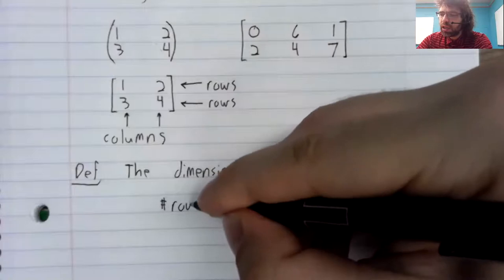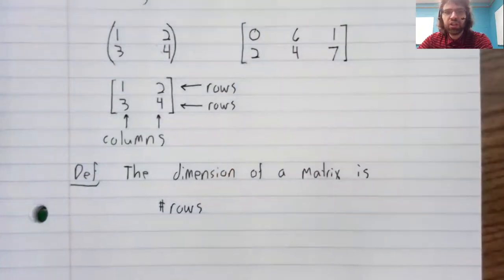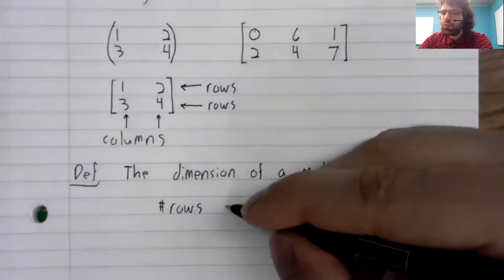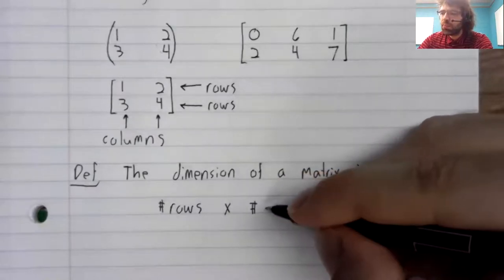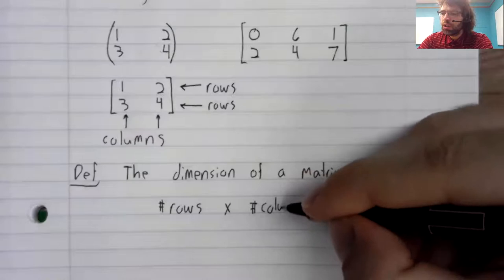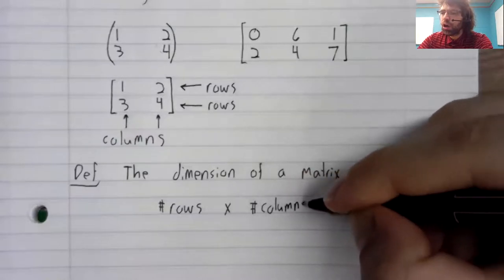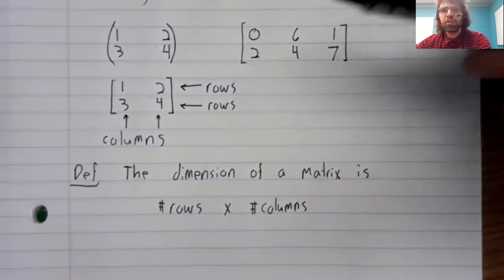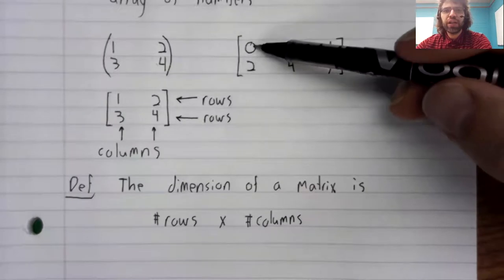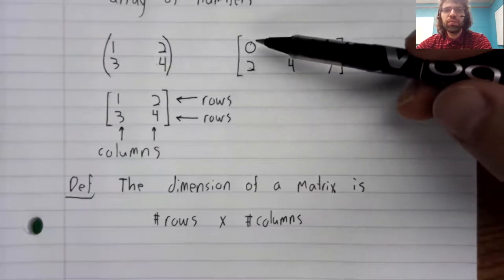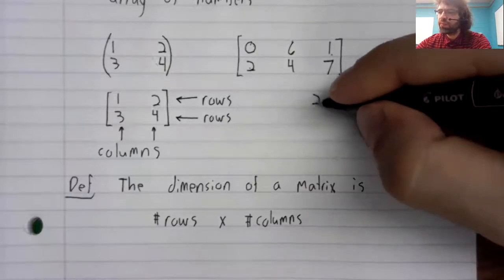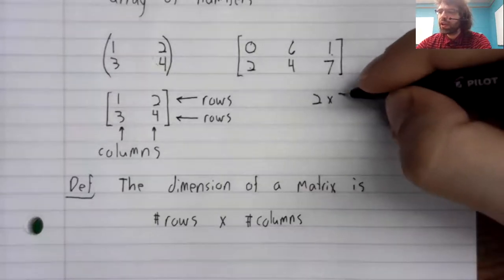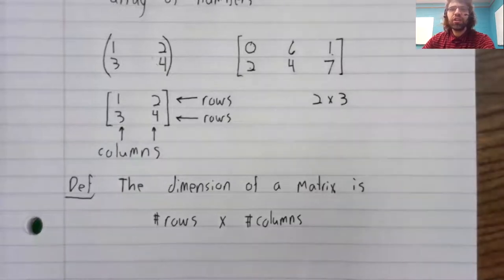The dimension of a matrix is given as the number of rows times the number of columns. So this matrix here has two rows and three columns, and its dimension is two by three.